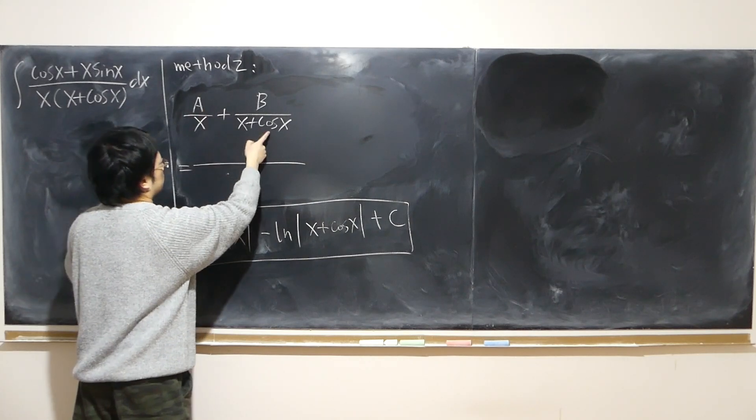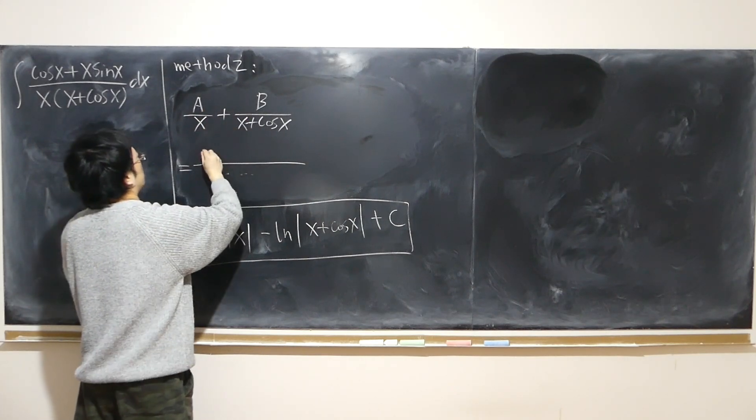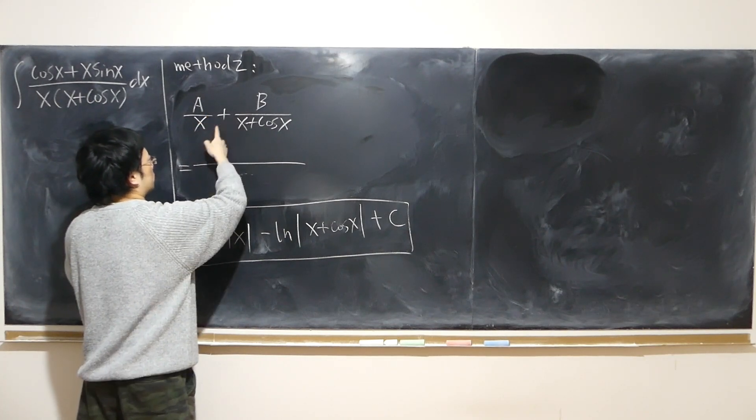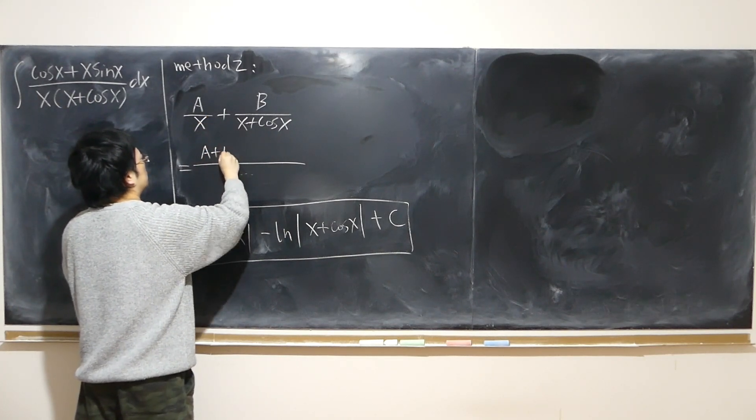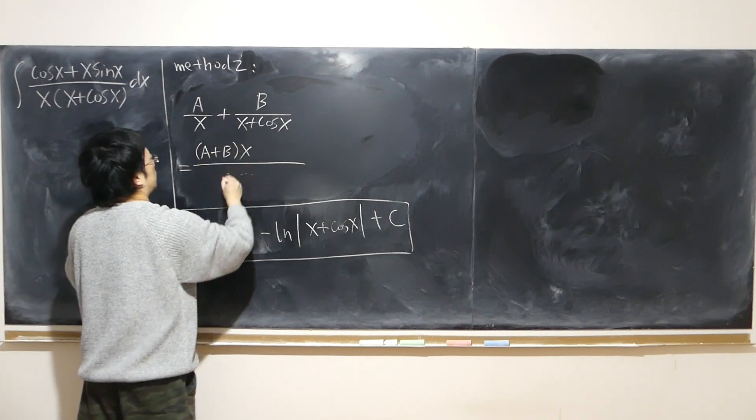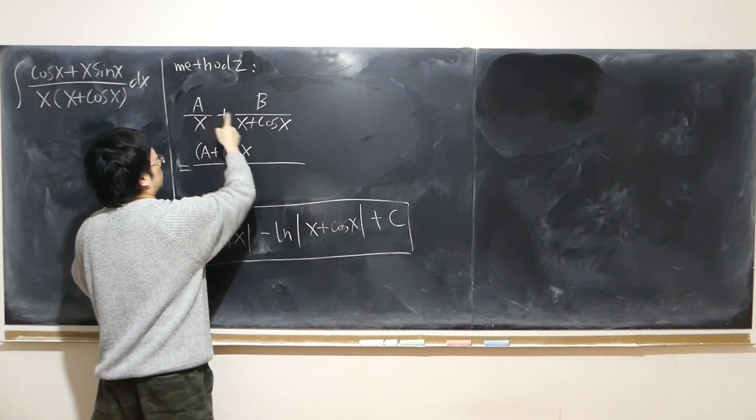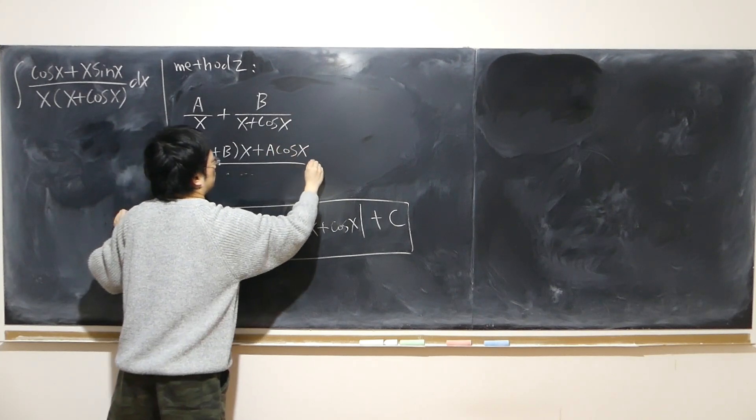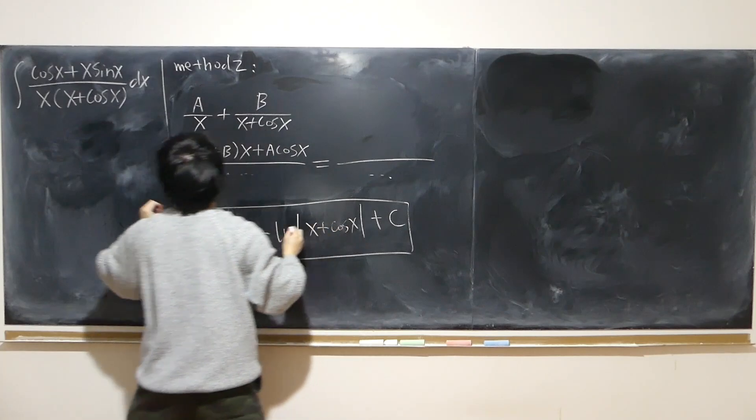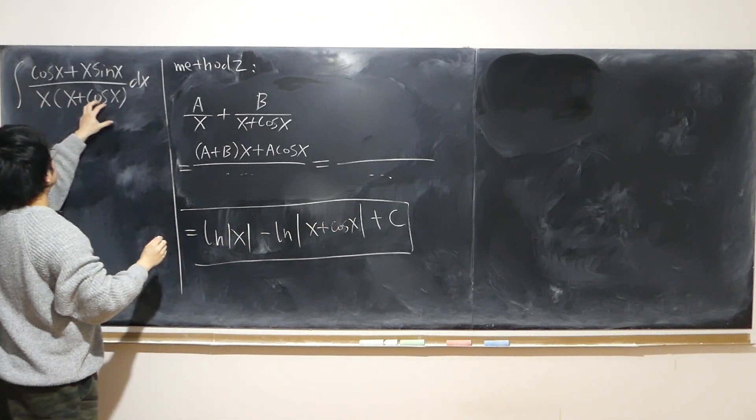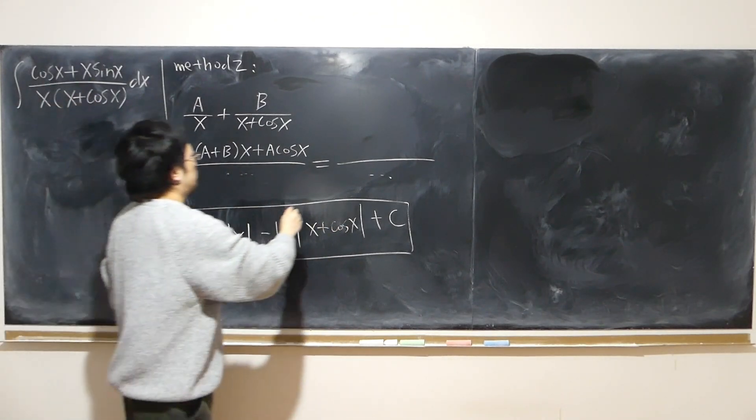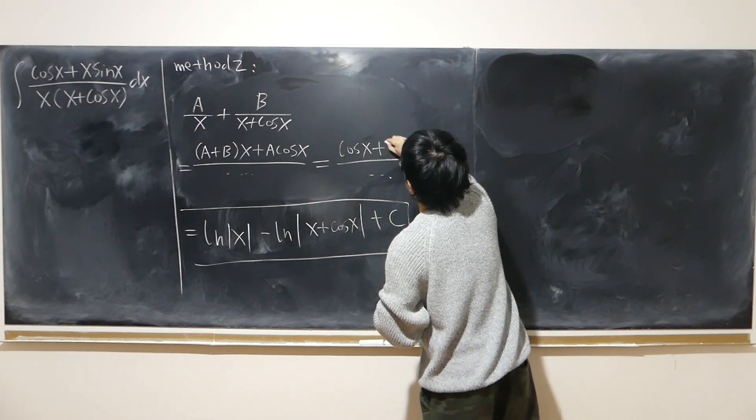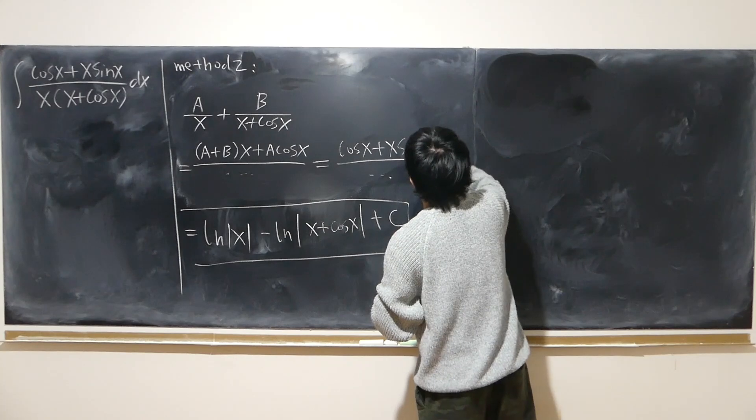a and b are not necessarily constants. They could involve trigonometry. So anyway, so in the end my goal is, so the bottom is just multiply this and that. So top is just this times that, this times that. So the x term, right, a times x, b times x. So a plus b times x. a times cosine x.